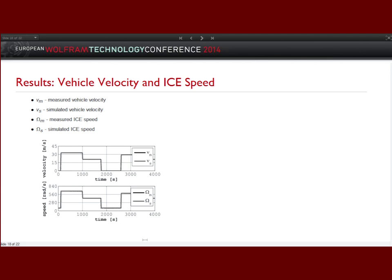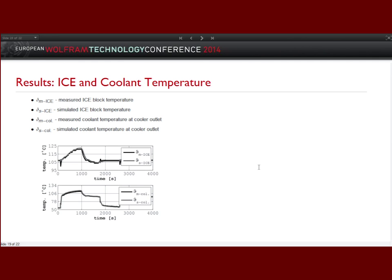This is the comparison between measurement and simulation. You can see car speed — comparison between measured and simulated data. Here we have the engine speed of the internal combustion engine. The next slide shows a comparison between measured and simulated internal combustion engine block temperature, and also the comparison at the cooler outlet coolant temperature. We can see that the correlation between measurement and simulation is very good.